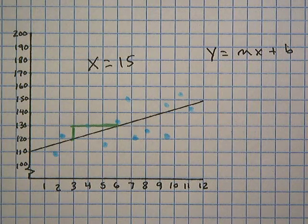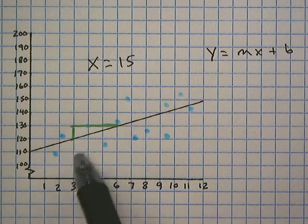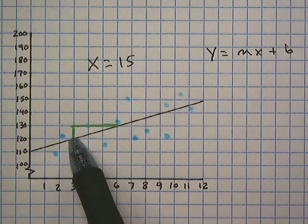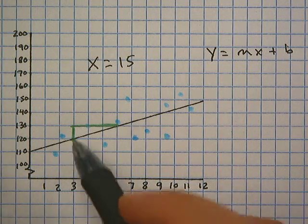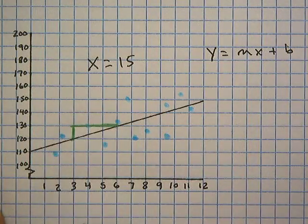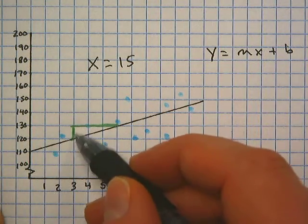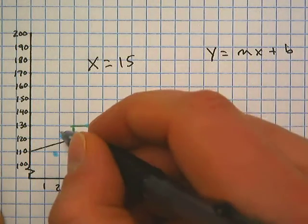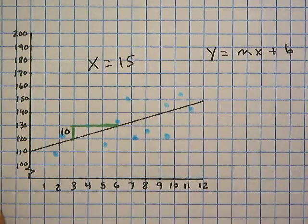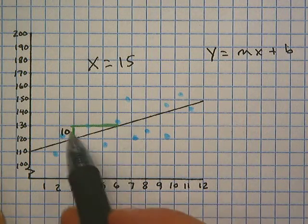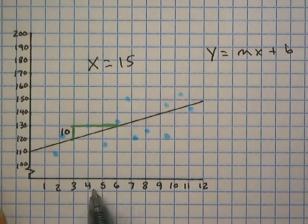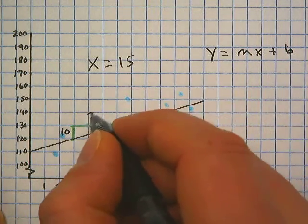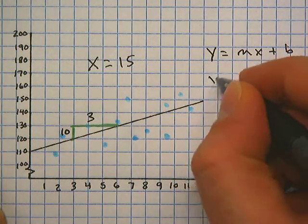Now if you remember, slope is rise over run, so we want the change in y over the change in x. Be sure and be careful to pay attention to the scale here because though it only increases one grid, that grid is worth a value of 10. And then going to the right, it does increase three blocks, which that does go with the scale of each block equal to 3. So the slope here is 10 thirds.